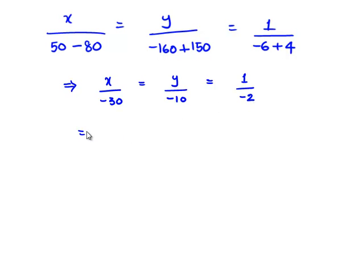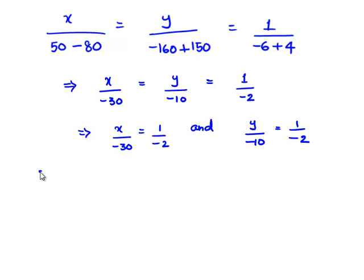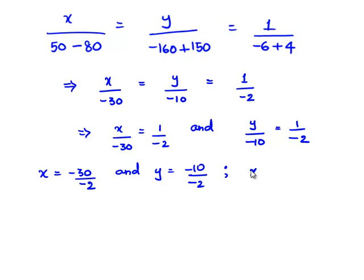We can write x divided by minus 30 equals 1 divided by minus 2, and y divided by minus 10 equals 1 divided by minus 2. That is, x equals minus 30 divided by minus 2, and y equals minus 10 divided by minus 2. Therefore, x equals 15 and y equals 5.